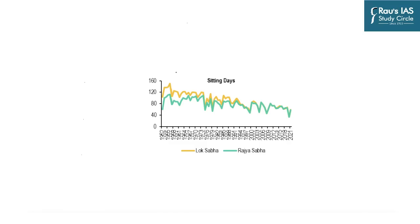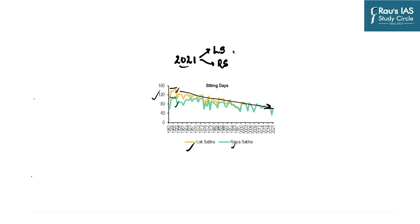Any discussion on parliamentary productivity must reference this graph: on the Y-axis are number of days — yellow for Lok Sabha, green for Rajya Sabha. In the initial phases, both houses met on average around 160 to 120 days. By 2021, the average had reduced to around 80 days — a clear declining trend in the number of days both houses are meeting. This is just about quantity.